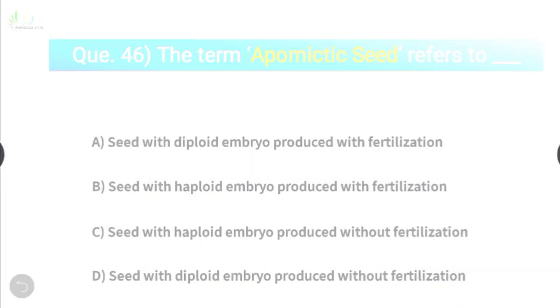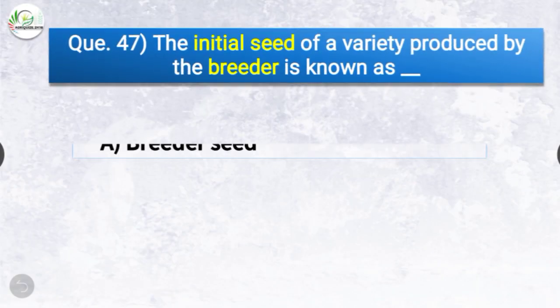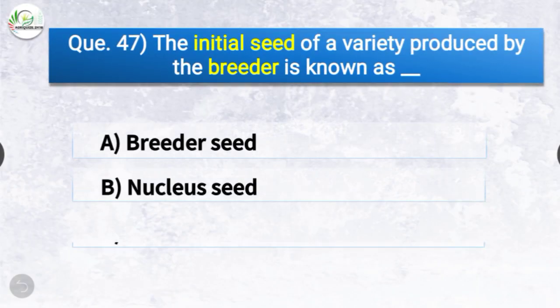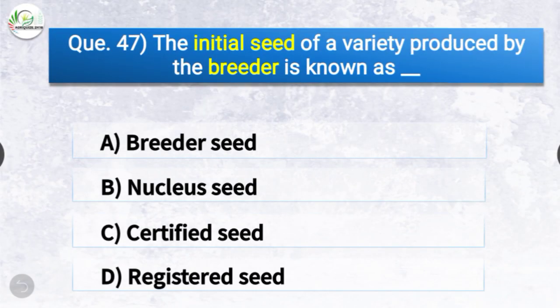Question number forty-seven: The initial seed of a variety produced by the breeder is known as — the options are breeder seed, nuclear seed, certified seed, or registered seed. The correct answer is option A — breeder seed. The initial seed of a variety produced by the breeder is known as breeder seed.